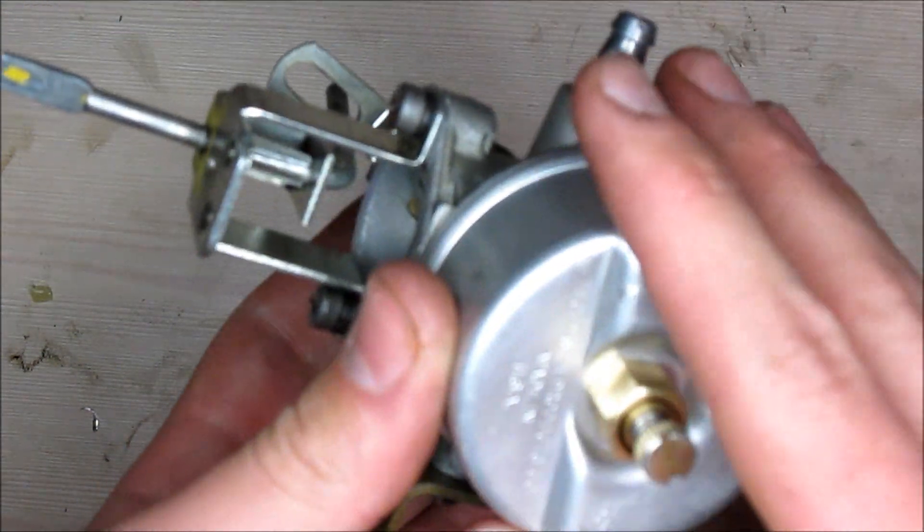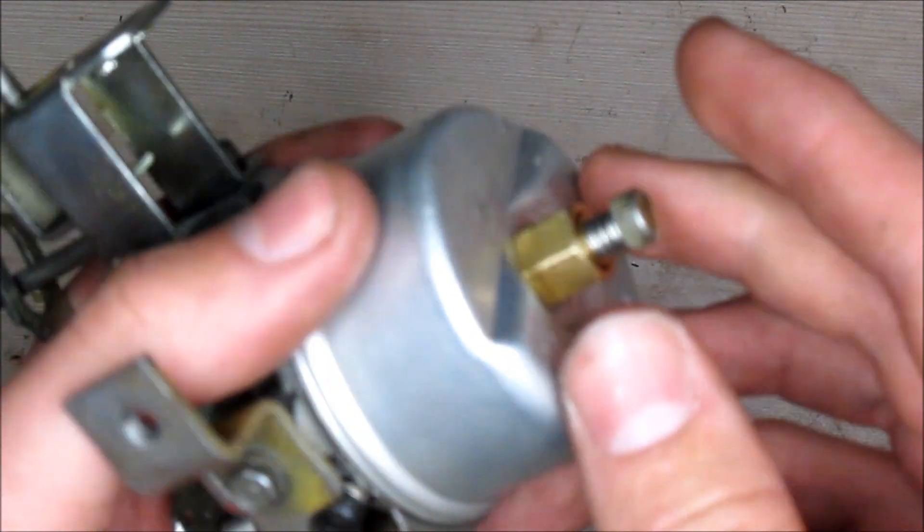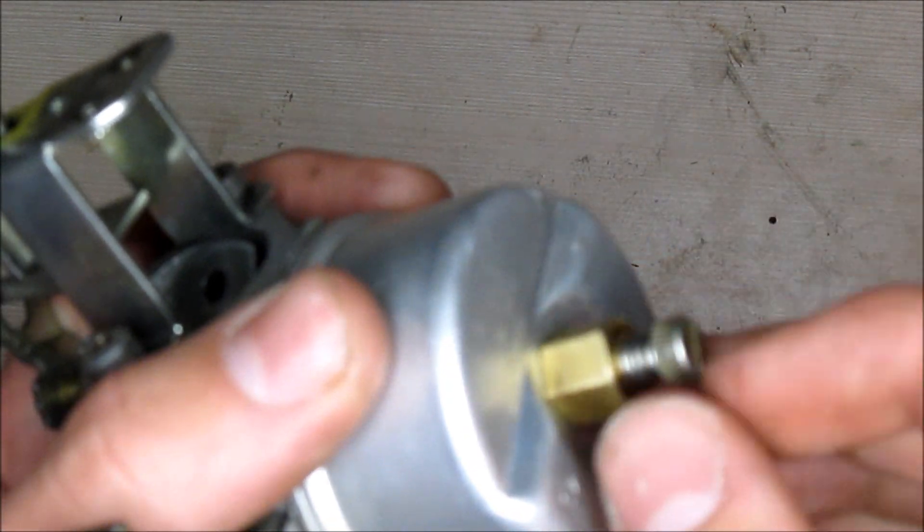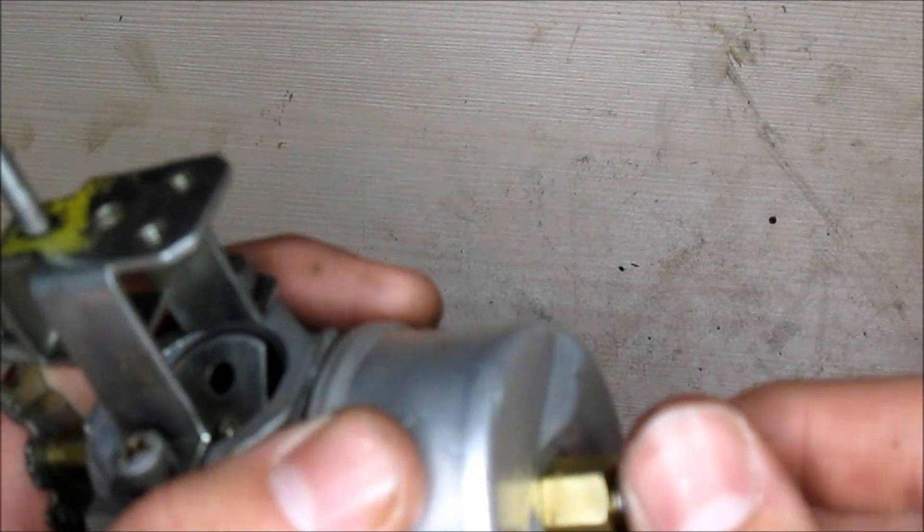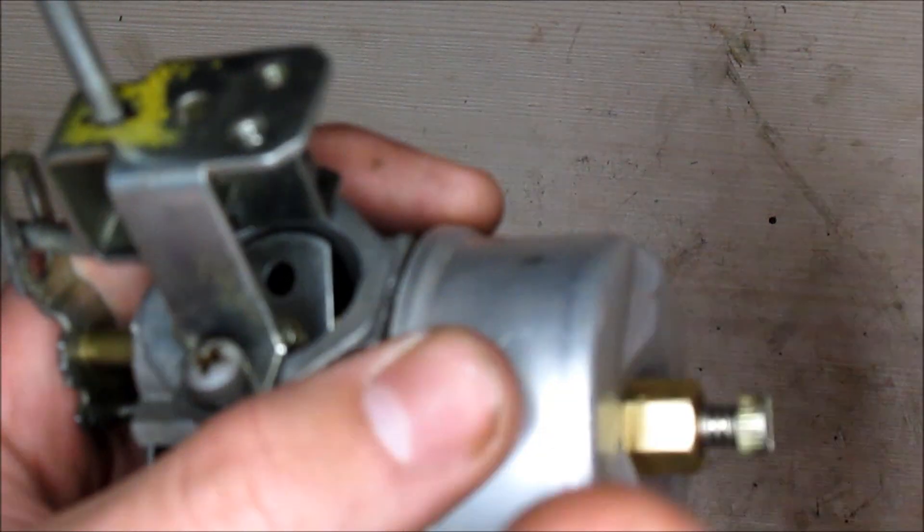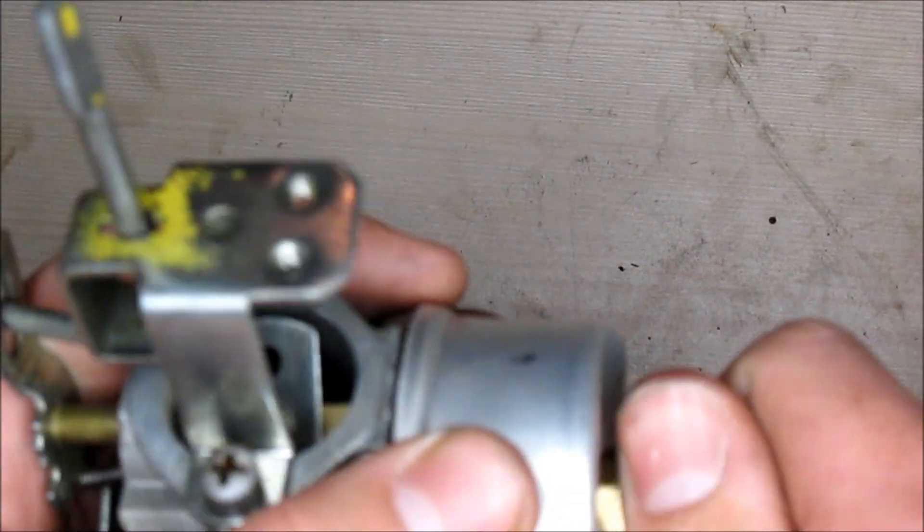We're going to go ahead and disassemble it. First thing you want to do is remove this large screw from here. Not this one, this one just releases fuel. If it is still full of fuel, go ahead and take the screw off. However, in my case, there is no fuel in here, so I can just go ahead and take this off.